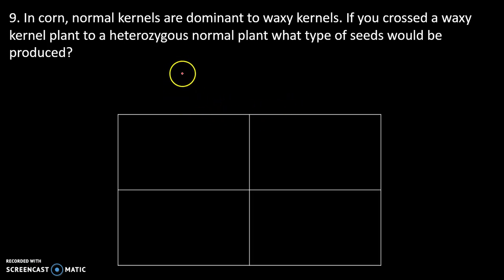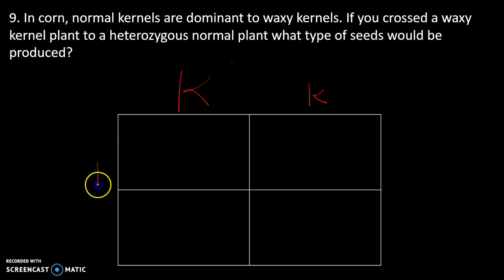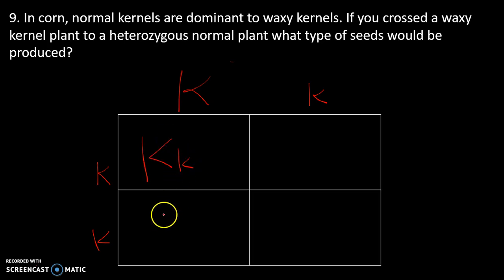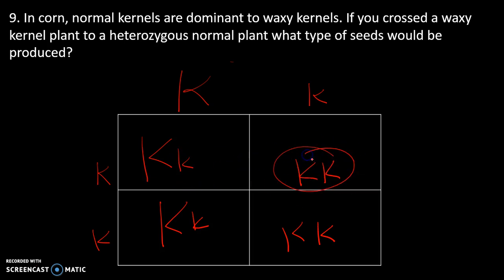In corn kernels, normal kernels are dominant to waxy. Cross a waxy kernel with a heterozygous normal — I'll use K. That gives us: 50% of the time we end up with heterozygous (normal), and 50% of the time homozygous recessive (waxy).